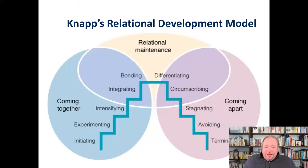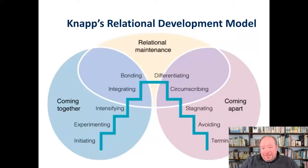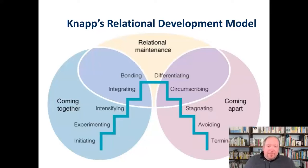It's really a worthwhile area to explore just for understanding. When you find out more about each of these stages, I imagine you'll be able to look at a particular relationship and say, yeah, I can identify that stage — it's going to seem very relatable. So one of the ways we look at relationships is through this kind of development model, like Knapp's staircase model, for examining the different stages relationships can go through.